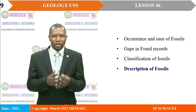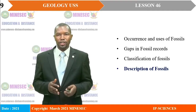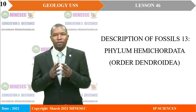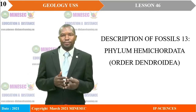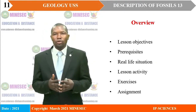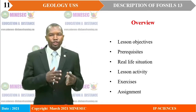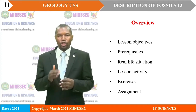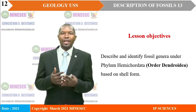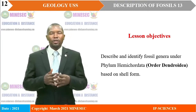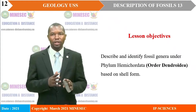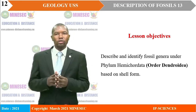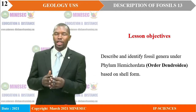Our focus for today will be on description of fossils. Lesson 46 is titled 'Description of Fossils Number 13.' We shall focus on Phylum Hemichordata under the order Dendroidea — Graptolites. In this lesson, we look at the objectives, the prerequisites, the real-life situation. We'll have some activities, exercises, and we shall end our lesson with an assignment. Our lesson objective: at the end of this lesson, we shall be able to describe and identify fossil genera under Phylum Hemichordata — specifically the order Dendroidea — based on the shell form, that is, the morphological and ecological aspects of the shell.